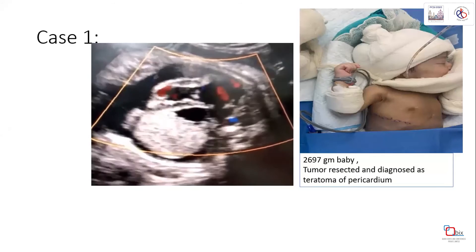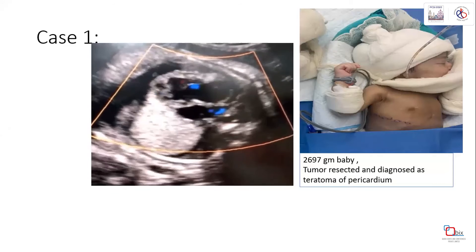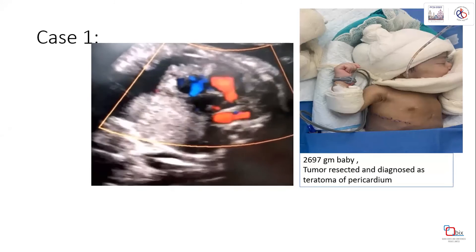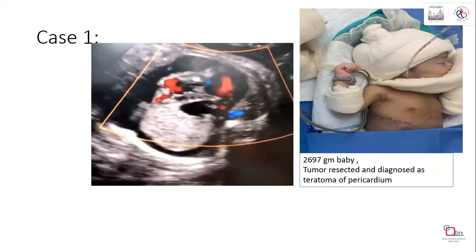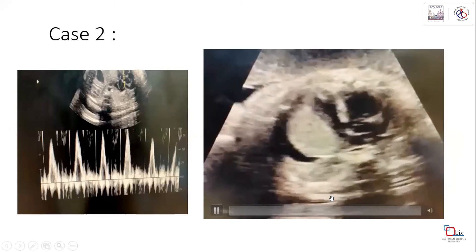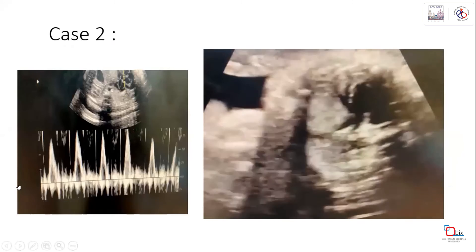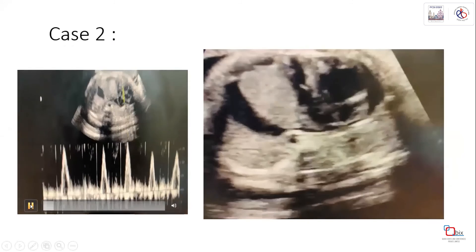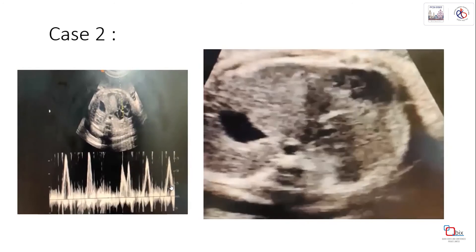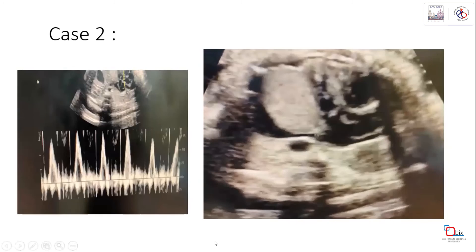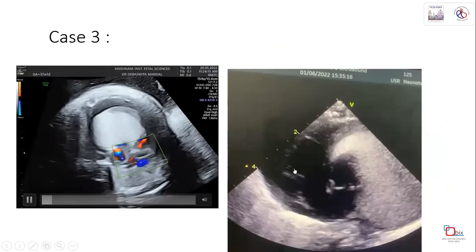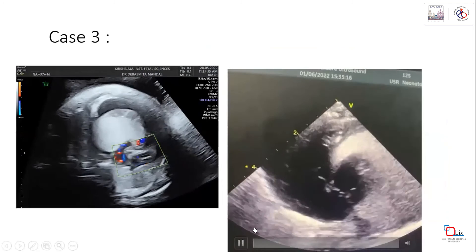In the pericardial tumor case, while color Doppler is not always necessary, it is essential to assess how the four chambers are functioning, how much compression is occurring, and whether the outlet is obstructed. The baby underwent surgery and is doing well. There is also gross aortic obstruction visible in this case, yet the patient is recovering. Another pericardial tumor case involves a rhabdomyosarcoma.